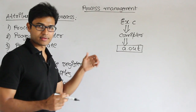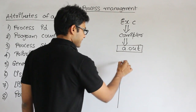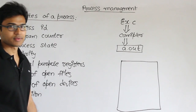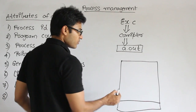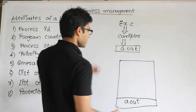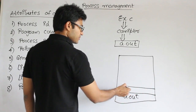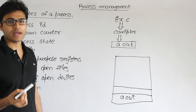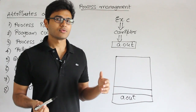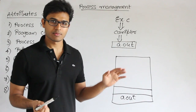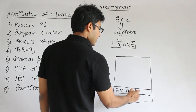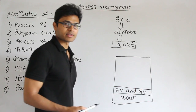Whenever we want to execute a process, the operating system will create a structure in the main memory. Your executable code — the a.out or .exe file — will be here. Above this, your program sometimes has static variables. Static variables means these variables will be created once and then they are going to remain forever throughout the lifetime of the process.